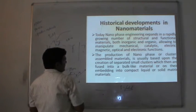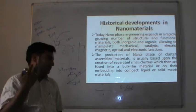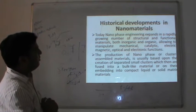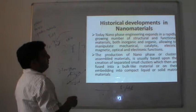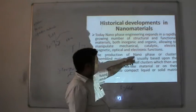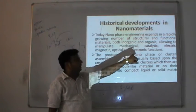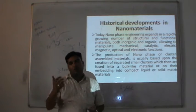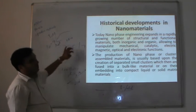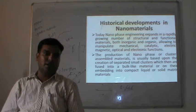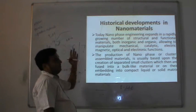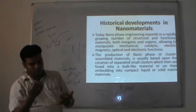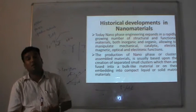Today, nanomaterials engineering expands into a rapidly growing number of structural and functional materials — both inorganic and organic — allowing us to manipulate magnetic, electric, optical, and electrical functions. Nano is not just about the size in the order of 10⁻⁹ metres. It is about understanding the material and improving it by changing its structure. For example, magnetic nanoparticles, electrically conducting nanoparticles — we can place atom by atom to improve the properties of the material.